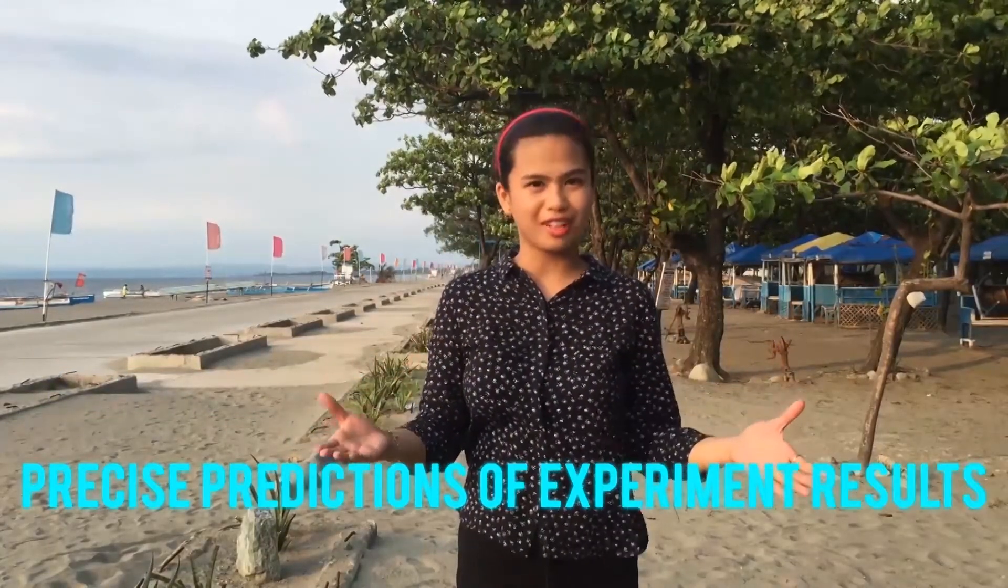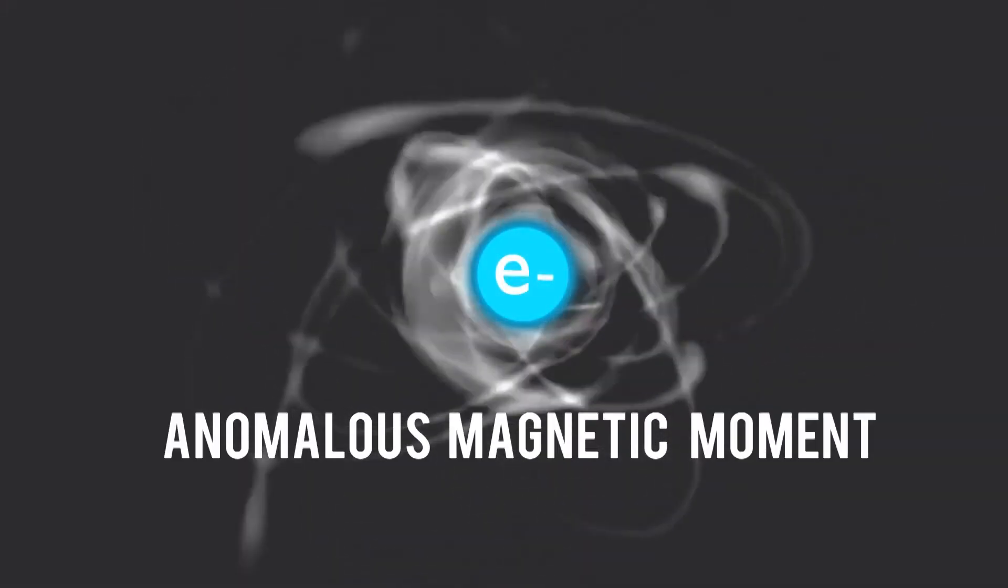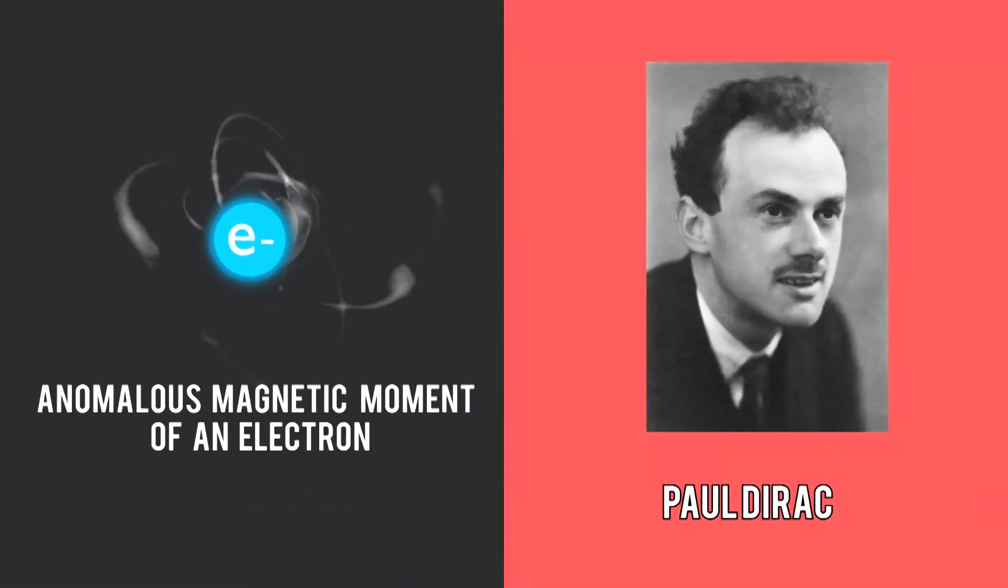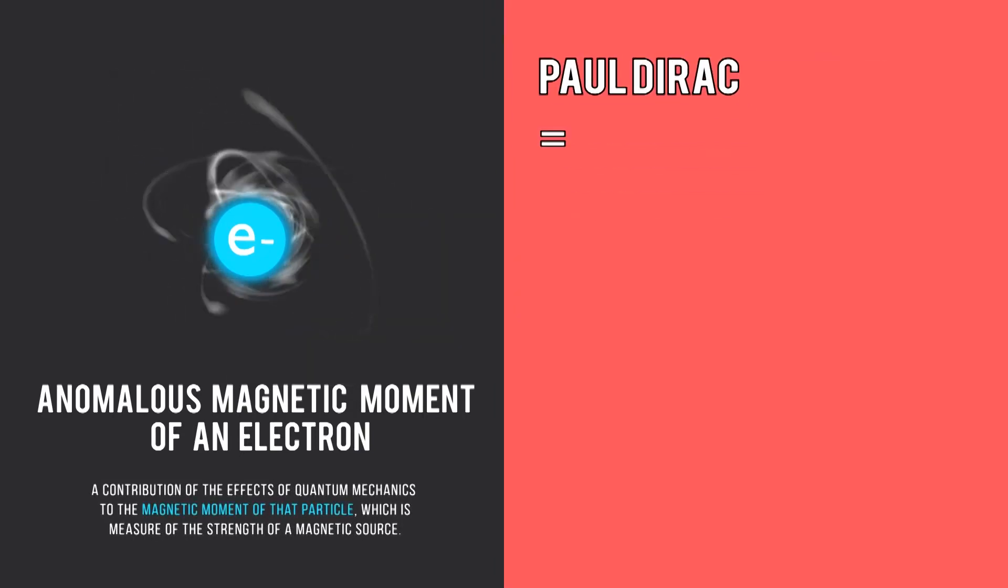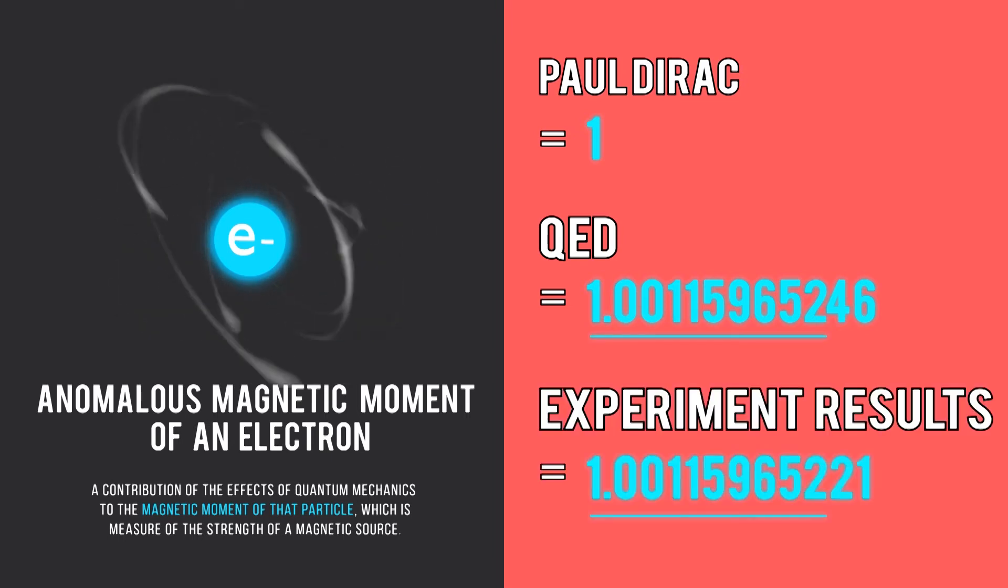These equations can make very precise predictions of experiment results. For instance, in solving for the anomalous magnetic moment of an electron, physicist Paul Dirac had a simple answer represented by 1. QED, however, predicted a value closer to the experiment's outcome.